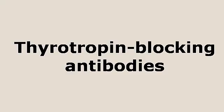The fourth main type of thyroid antibody is called thyrotropin blocking antibodies, which is a type of TSH receptor antibody. Thyroid stimulating immunoglobulins are also a type of TSH receptor antibody and are the most common type. Thyrotropin blocking antibodies result in hypothyroidism, whereas thyroid stimulating immunoglobulins typically result in hyperthyroidism.